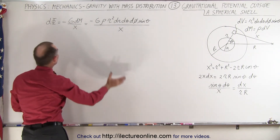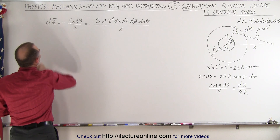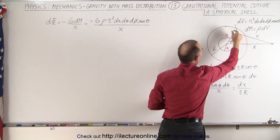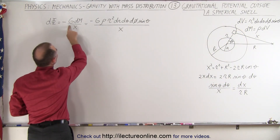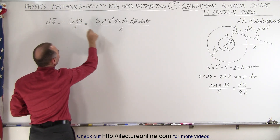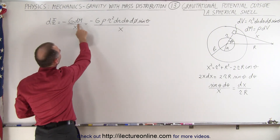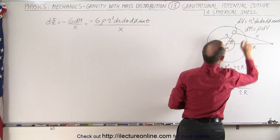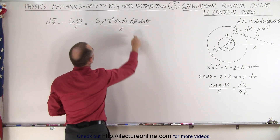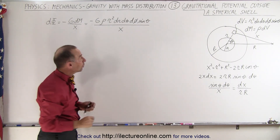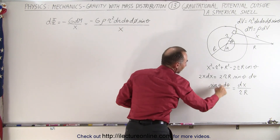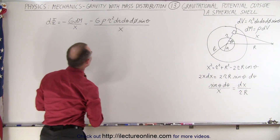We start with the definition of gravitational potential. For the small volume or mass element, it's equal to −G times the mass of that element divided by the distance x from the point of interest to that mass element. Replacing dm by ρ dV, we get dΦ = −G ρ r² dr dθ dφ sin(θ) / x. Notice we have sin(θ), dθ, and x — those three can be replaced by dx / (rR).